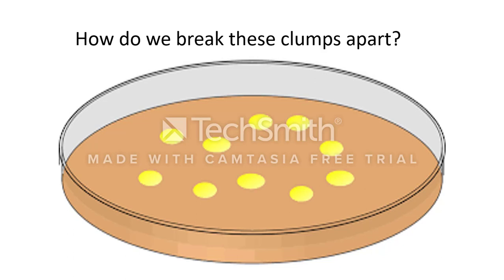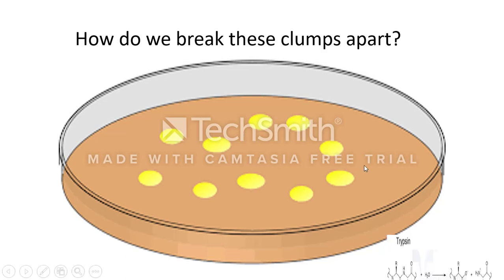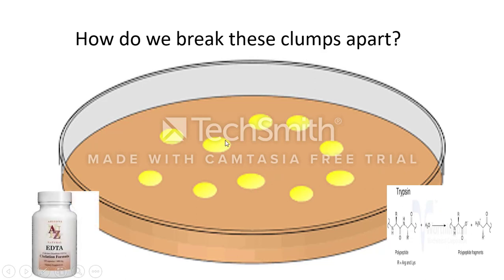we then use things such as trypsin or EDTA. Trypsin is capable of taking the sticky property on the outside cell surface and getting rid of it. This begins to isolate cells from the group. EDTA is an ion chelator that sucks up calcium and magnesium from the environment, and this calcium and magnesium are used to bind to the cell surface proteins that make them sticky. So in both cases, these cells lose their sticky ability and are then isolated.